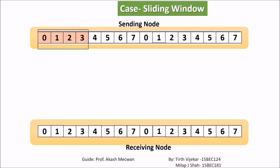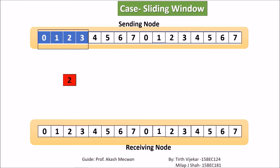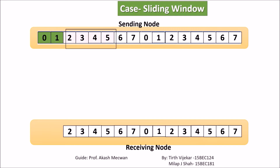Now the same example in the sliding window case. The only difference is the window will slide up to the lost frame and then send that window. In this case it is frames 2, 3, 4, 5. Let's see the remaining animation to learn the concept of Go-Back-N sliding window.